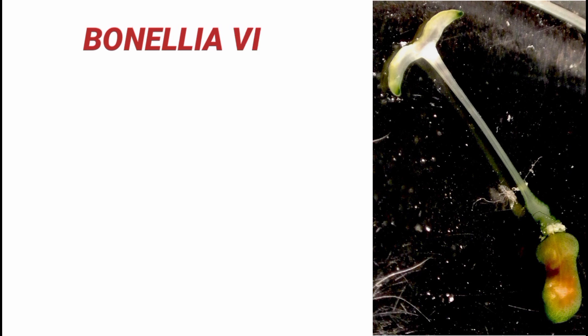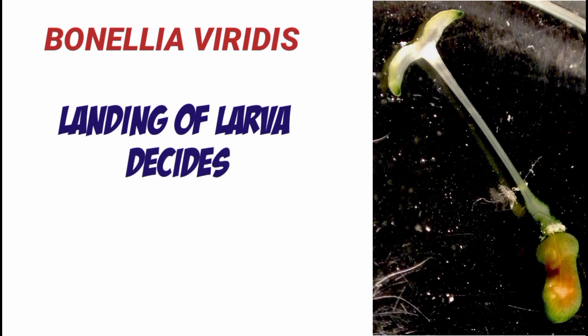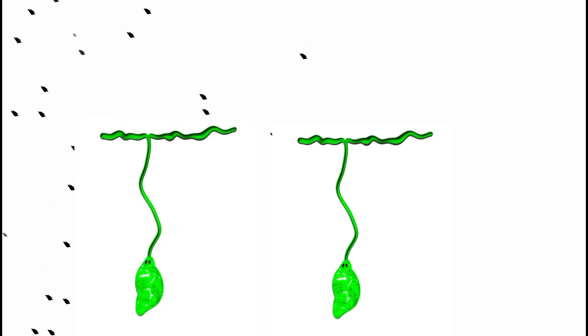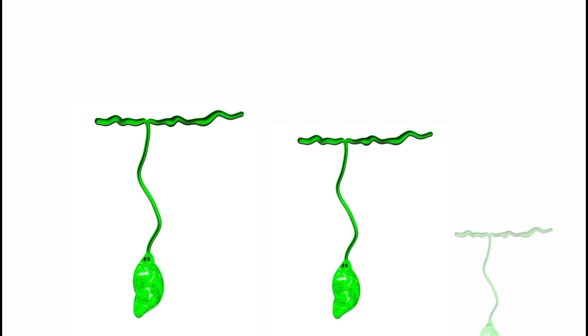One more example is the sea worm Bonellia viridis. Here sex is not decided by temperature, or by X and Y, or by the death of male or female — it is purely decided by where the larva lands. If the larva lands on the female, it will be converted into male, and the male and female live in a symbiotic relation. But if the larva lands on the surface, it will turn out to be female. The landing of the larva decides the sex of the individual.